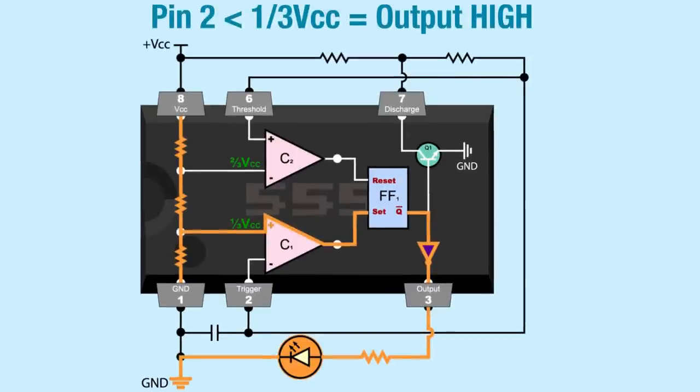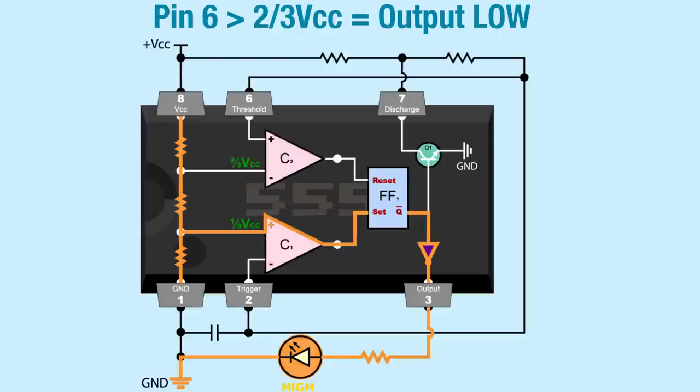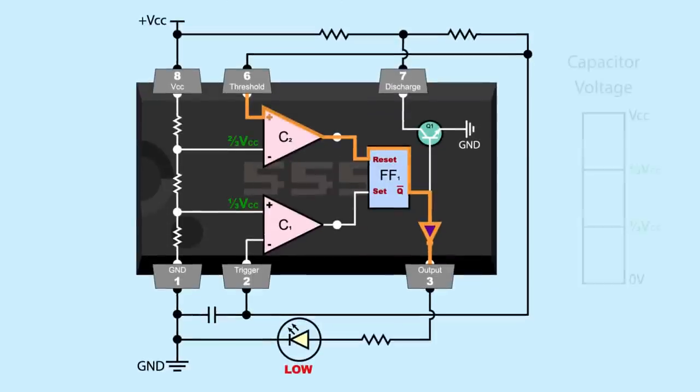When pin 2 has a voltage lower than 1/3 VCC, the output is set high. And when pin 6 has a voltage higher than 2/3 VCC, the output is reset back to low. And the voltage supplied to the pins is set by the capacitor voltage.